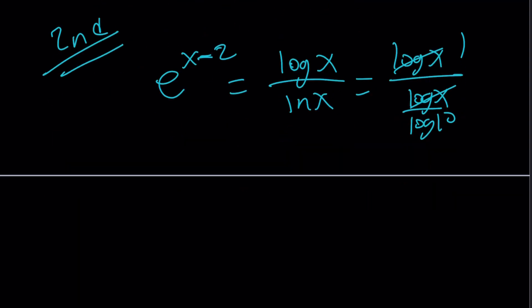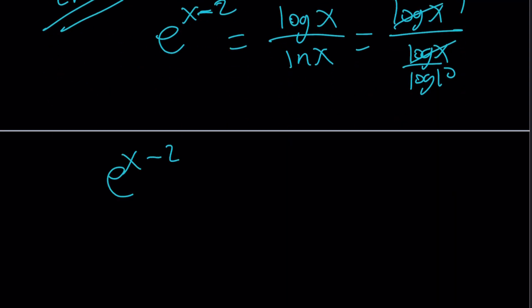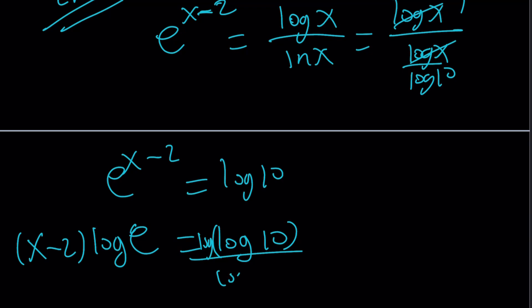Log x cancels out. From here, we get e to the power of x minus 2 equals log 10. And then log both sides, you're going to get log x minus 2 times log e equals log 10. And then what's going to happen, actually, log log 10, I should say. And then you can divide both sides by log e. And then add 2 to both sides and you'll get the same answer, pretty much.